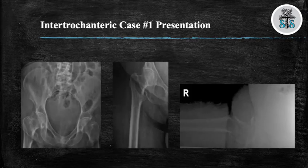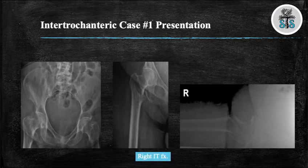Time for the first case. What do you see? We have three views: AP pelvis, AP right hip, and cross-table lateral over right hip, demonstrating a minimally displaced right intertrochanteric hip fracture. If you're having a hard time seeing this fracture, make sure you're using all the views that you're given. In this case, the fracture is best seen on the cross-table lateral.